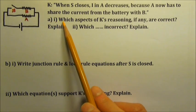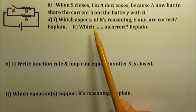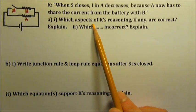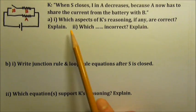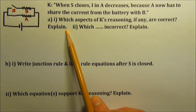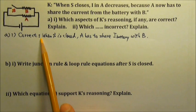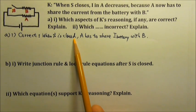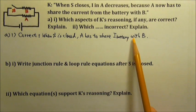For this kind of question, our answer should include two parts: one part to specify which aspects of the reasoning are correct, and another part to explain why they are correct. You don't have to write a lot — you just have to make sure to cover these two parts. The correct reasoning is: when the switch is closed, A has to share the battery's current with B.